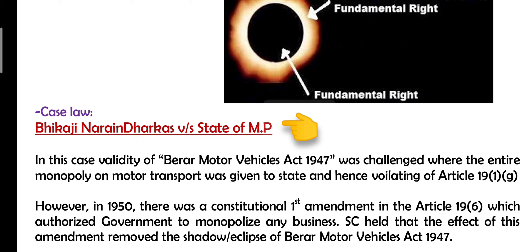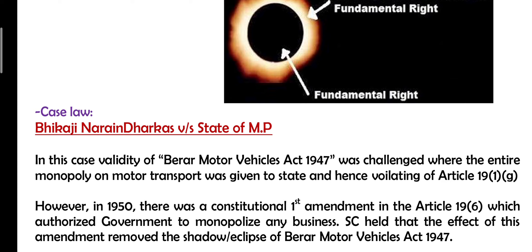A very famous case for the Doctrine of Eclipse is Bhikaji Narain Dhakras v. State of Madhya Pradesh. In this case, the Berar Motor Vehicles Act created in 1947 was challenged on the ground that the state was enjoying a whole monopoly of motor transport. The entire act was said to be violating fundamental rights under Article 19(1)(g), which gives everyone the freedom of trade and occupation. The Supreme Court used the Doctrine of Eclipse to make the Berar Motor Vehicles Act dormant and gave importance to fundamental rights. Then in 1951, the First Amendment to Article 19(6) gave the state the power to monopolize any business. So the Berar Motor Vehicles Act came out of eclipse and became active again. This is the Doctrine of Eclipse.